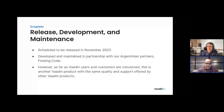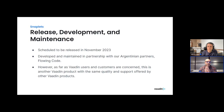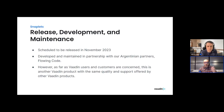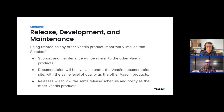The user manager snaplet is scheduled for an alpha release soon that everyone can try. The general availability release is targeted for November 2023, compatible with Vaadin 24.2. We may later consider backporting support to Vaadin 23 and possibly 14. The snaplets are developed in partnership with Flowing Code. As a Vaadin product, it offers the same level of quality and support as any other Vaadin product, with documentation available under the Vaadin documentation website following the same release schedule and policy.